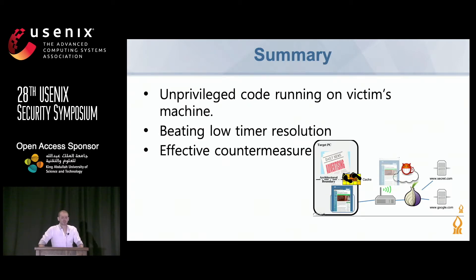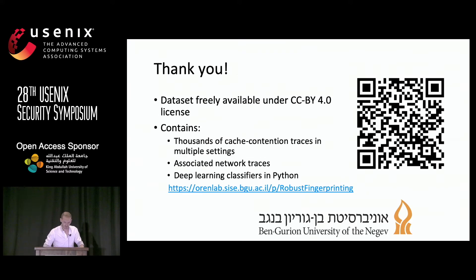In summary, we demonstrated unprivileged code running on the victim's machine that beats low timer resolution, and we presented an effective countermeasure. We have released several datasets on IEEE Dataset — thousands of cache contention traces totaling 140 gigabytes, associated with network traces for comparison. Deep learning classifiers and Python scripts are also available online for you to use and experiment with.